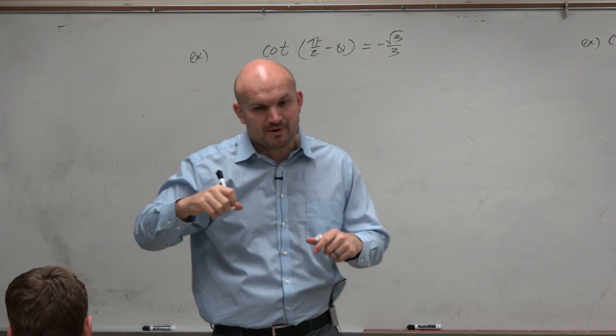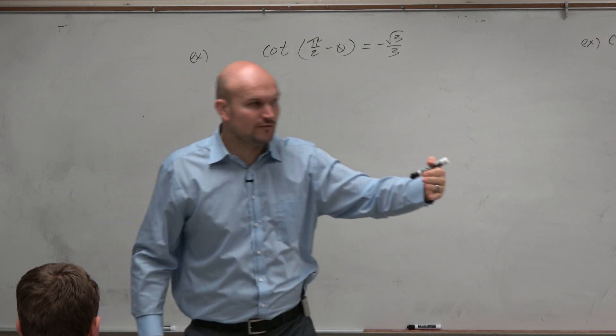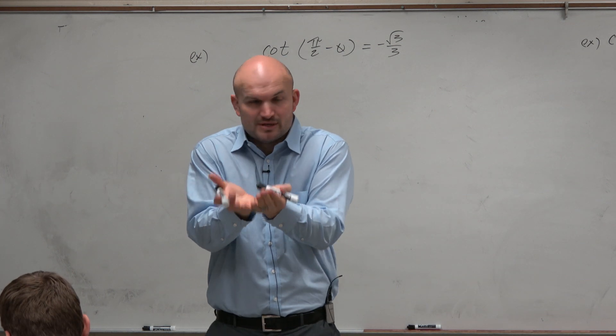So when I think about what are the functions, remember co-function identities, the way that I explain co-function identities is think of them like transformations of graphs. Like what functions, when you transform them, look just very similar to each other?